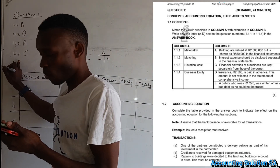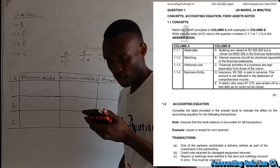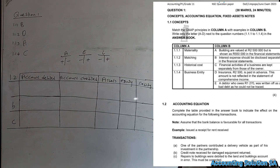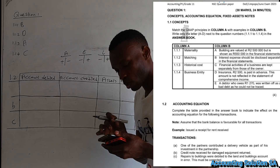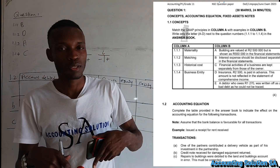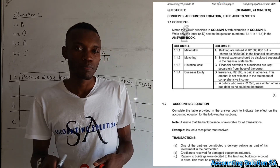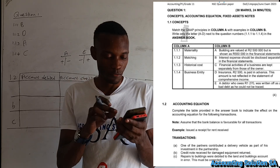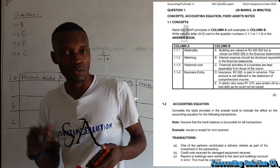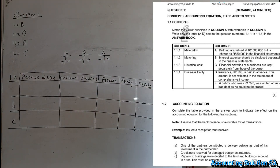Number E: an amount of 270 was written off as bad debt as it could not be traced — this one is not going to form part of any of the options listed here. Please tell me in the comment section which GAAP principle or accounting principle we are going to apply for number E. I will hear from you in the comments.